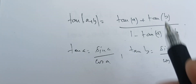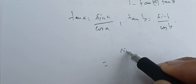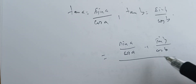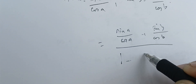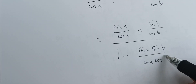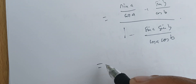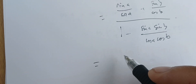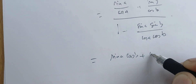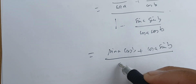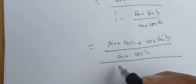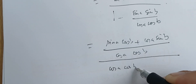So we start from here and arrive at this result. We know tangent of a is sine of a over cosine of a, plus sine of b over cosine of b, all over one minus sine of a times sine of b over cosine of a cosine of b. We're going to cross-multiply.